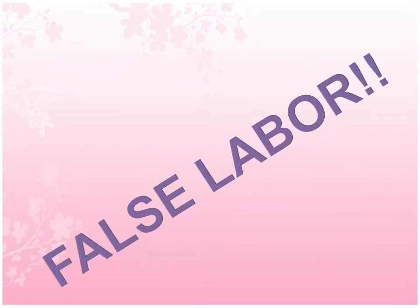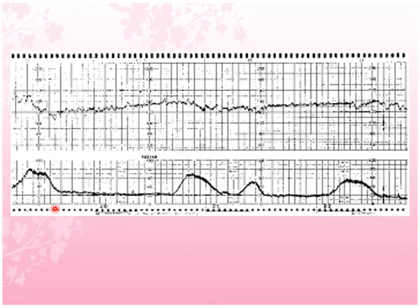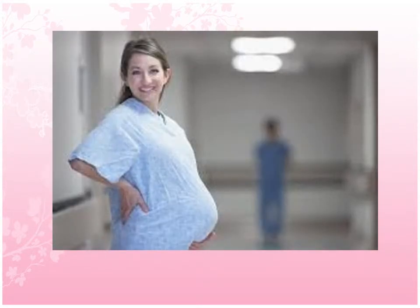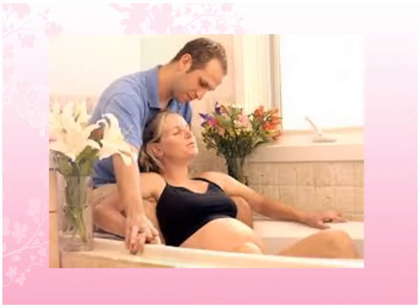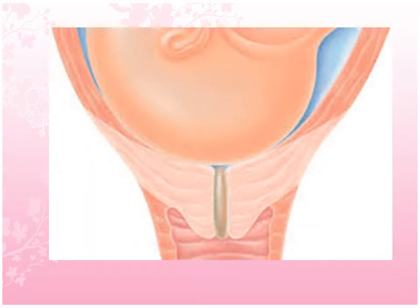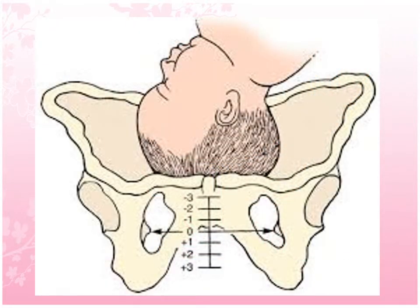In false labor, uterine contractions are irregular or temporarily regular. They generally stop when walking or changing position, and are felt usually in the back or in the abdomen above the navel. They are often stopped by comfort measures. Upon examination, the cervix may be soft, but there are no changes in effacement or dilation, no bloody show, the cervix remains in a posterior position, and the fetal presenting part is usually not engaged in the pelvis.